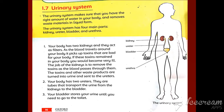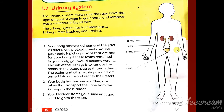Your body has two kidneys and they act as filters. As you can see in this picture, this is the urinary system, starting from the kidneys and ending at the urethra. The human body has two kidneys and they act as filters.